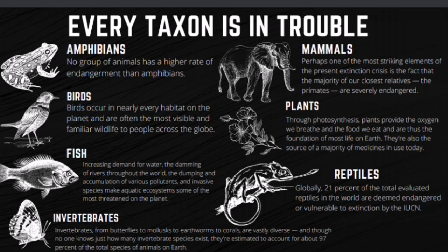Plants give us food and oxygen. Through photosynthesis, plants provide the oxygen we breathe and the food we eat, and are thus the foundation of most life on Earth. They are also the source of the majority of medicines in use today. Unlike animals, plants cannot readily move as their habitat is destroyed, making them particularly vulnerable to extinction. One study found that habitat destruction leads to an 'extinction debt' whereby plants that appear dominant will disappear over time because they aren't able to disperse to new habitat patches. With plants being the backbone of ecosystems and the base of the food chain, that's very bad news for all species including us.